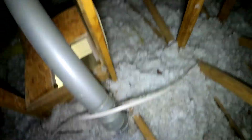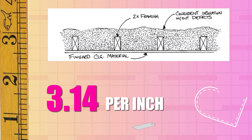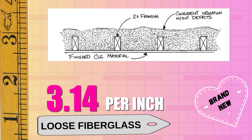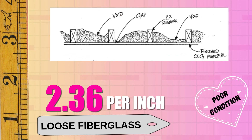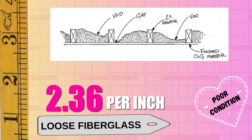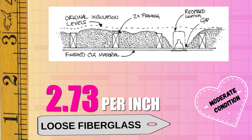Loose fill fiberglass presents as white shreds, pink squares, or yellow shreds. Generally, all three yield the same R-values per inch. New installations provide 3.14 R-value per inch, maintaining this value when well installed, but dropping to 2.36 R-value per inch in poor conditions. Moderately covered attics with loose fill fiberglass should be calculated at 2.73 per inch.